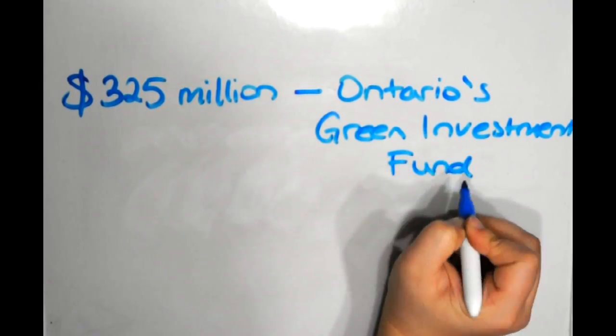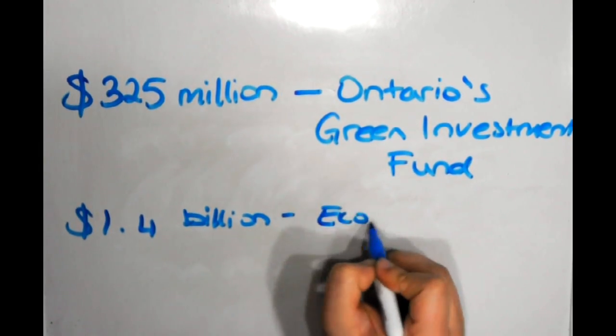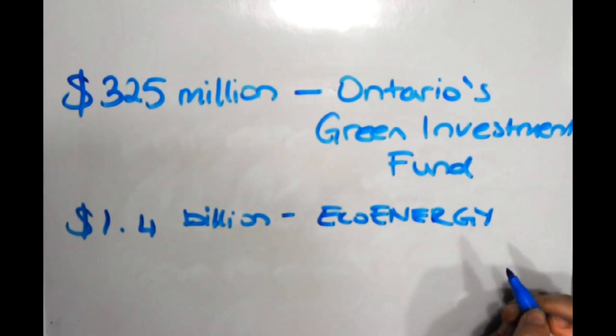Another program called EcoEnergy for Renewable Power by the government has also funded about $1.4 billion over 14 years to solar power and other renewable powers.